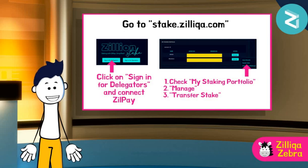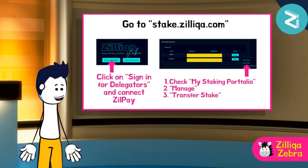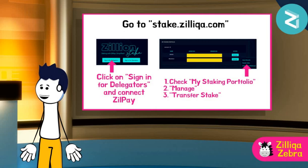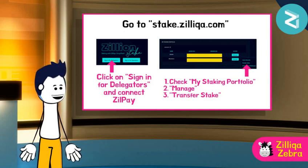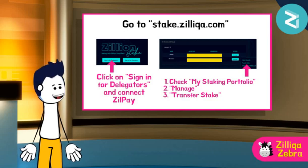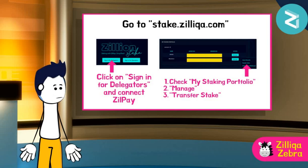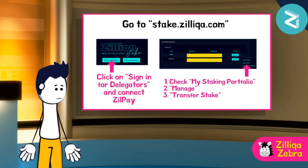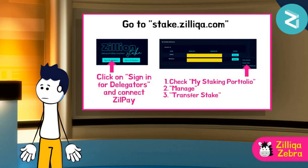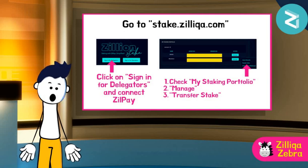Next, Zilliqa Zebra will go to stake.zilliqa.com and sign in as a delegator by connecting his ZIL Pay. He will see that his 1 million ZIL is accurately reflected under 'My Staking Portfolio.' He will then click on 'Manage' and then 'Transfer Stakes,' select CEX.IO, click on 'Transfer Stake,' and finally approve the transaction on ZIL Pay. The transfer is done.